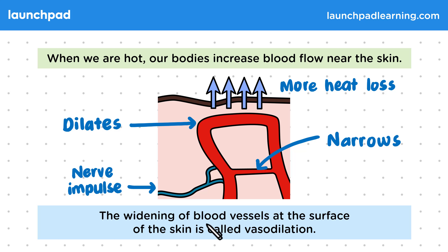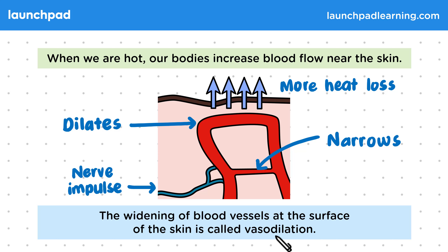The widening of blood vessels at the surface of the skin is called vasodilation. Vaso refers to vascular, meaning to do with the blood vessels, and dilation means widening, like when the pupils dilate.